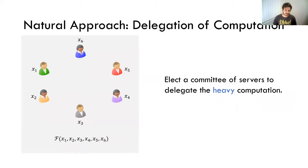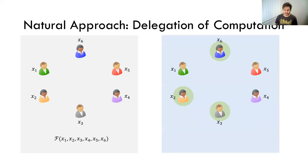So how does one actually achieve these results? A natural approach, which is a tried and tested strategy in the past, is this delegation of computation approach, where all the parties that want to compute a function elect a subset of them via some committee election procedure — denote them the servers. These servers are the ones that do the heavy computation, while the clients just sit back and receive the outputs. Let's say these three parties in the circles have been selected by a committee election procedure to be part of the server.